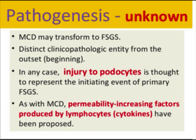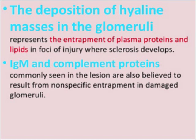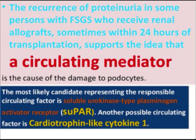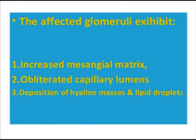As with MCD, permeability-increasing factors produced by lymphocytes have been proposed. The deposition of hyaline mass in the glomeruli represents the entrapment of plasma proteins and lipids in the foci of injury where sclerosis develops. IgM and complement proteins are commonly seen. The recurrence of proteinuria in some persons with FSGS who receive a renal allograft, sometimes within 24 hours of transplantation, supports the idea that a circulating mediator is the cause of podocyte injury.